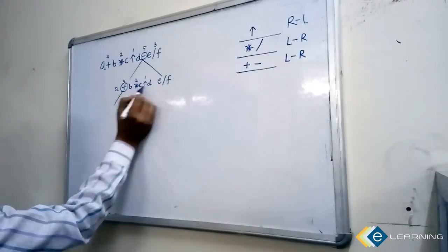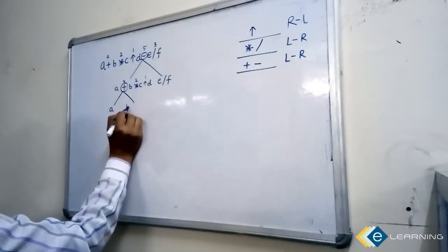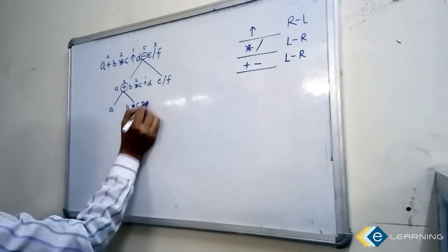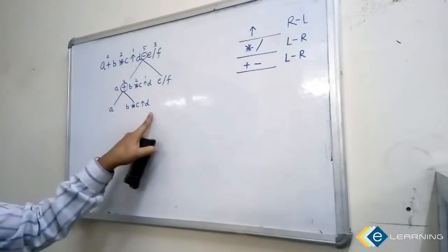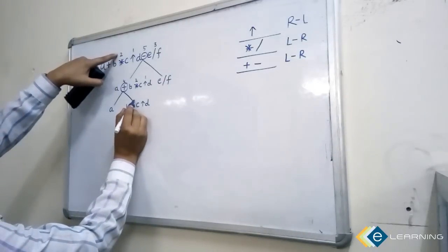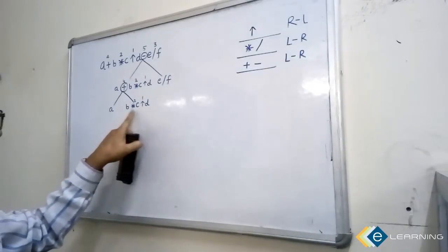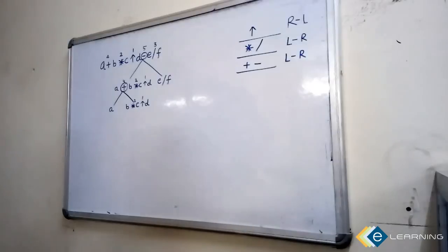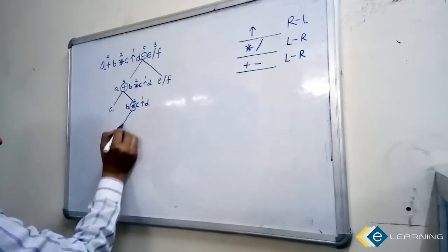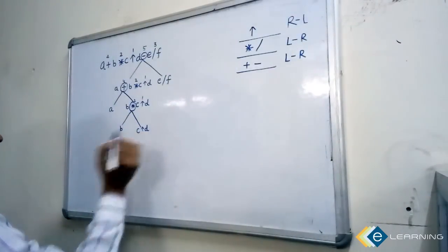Divide that sub-expression into two sub-expressions: a on one side, and b star c power d on the other. In this sub-expression, star is in second position and power is in first position. The operator evaluating last is star, so make it the parent and divide it into two sub-expressions: b, and c power d.